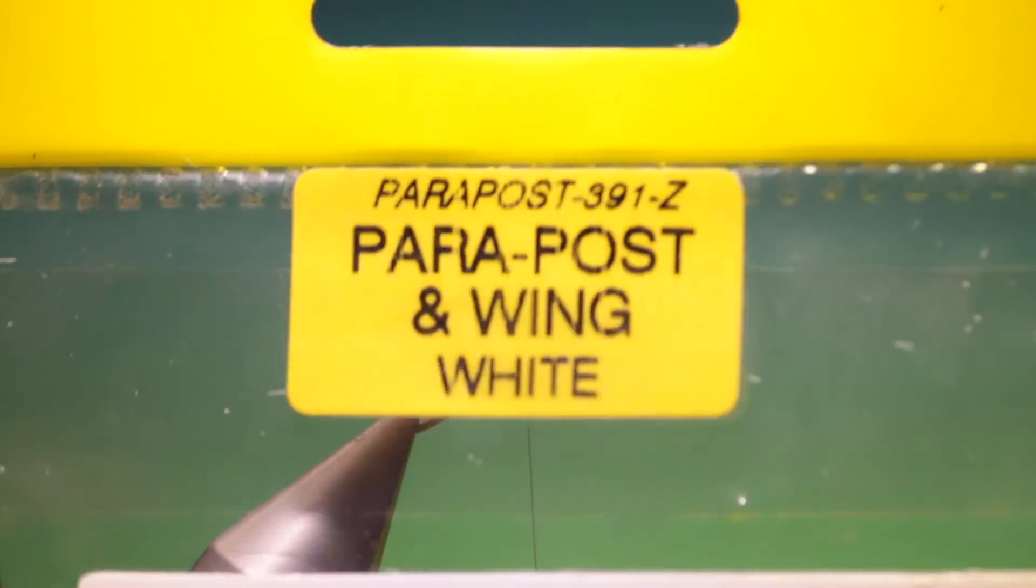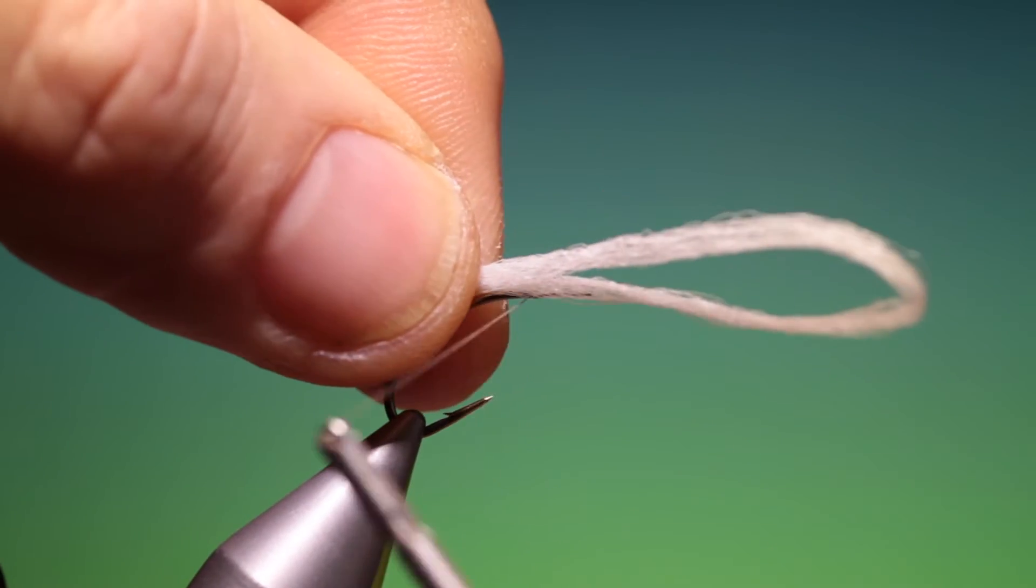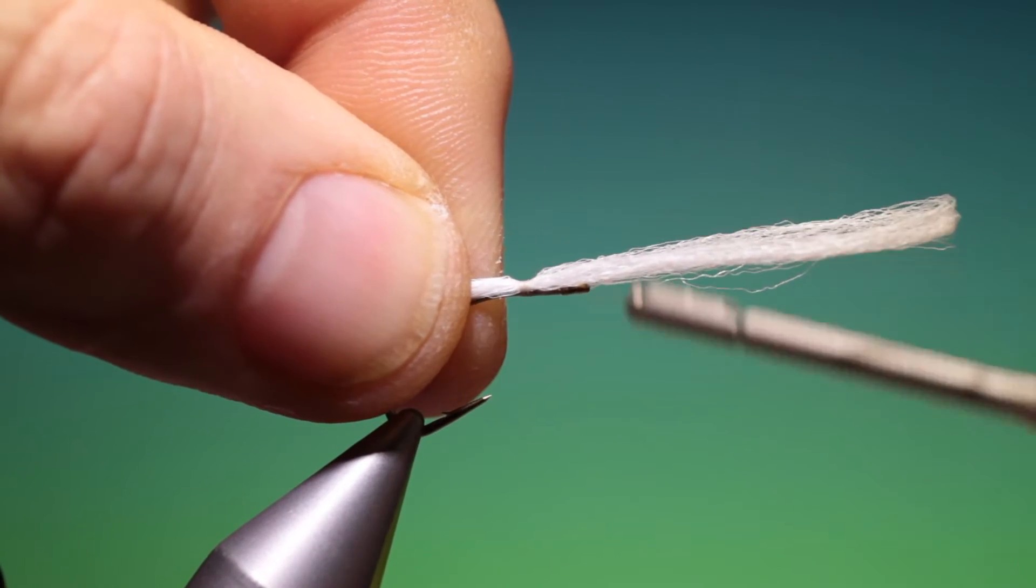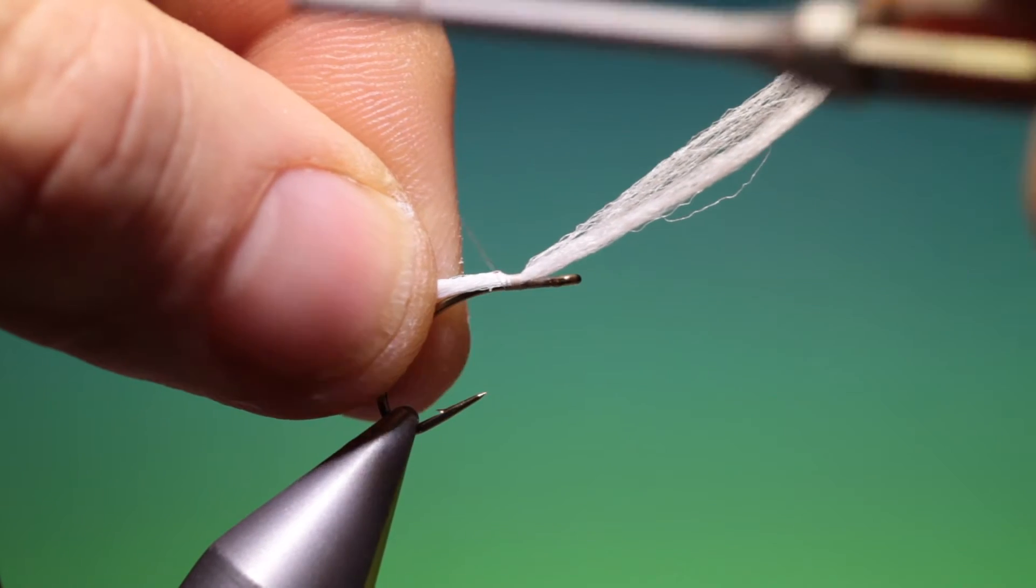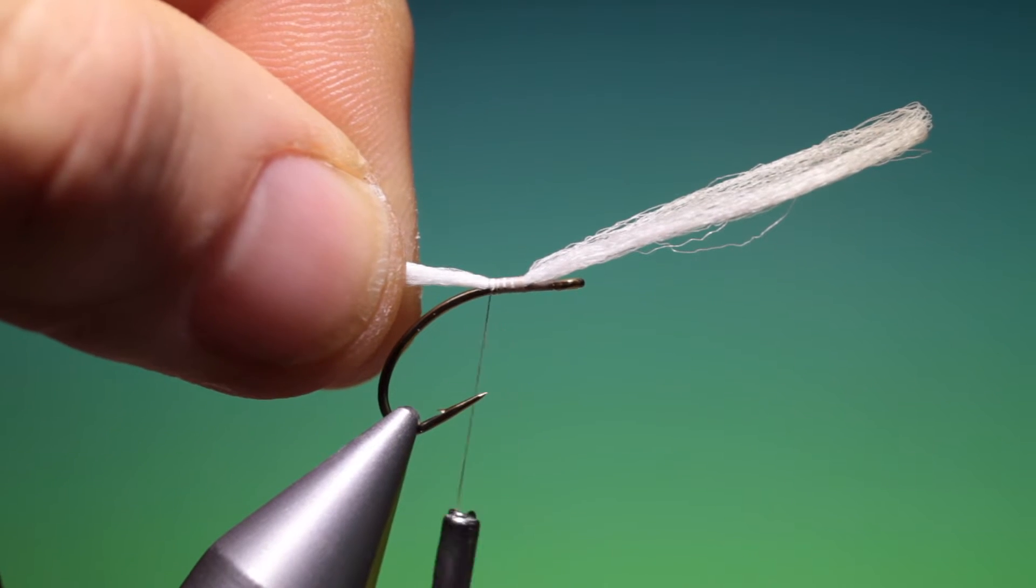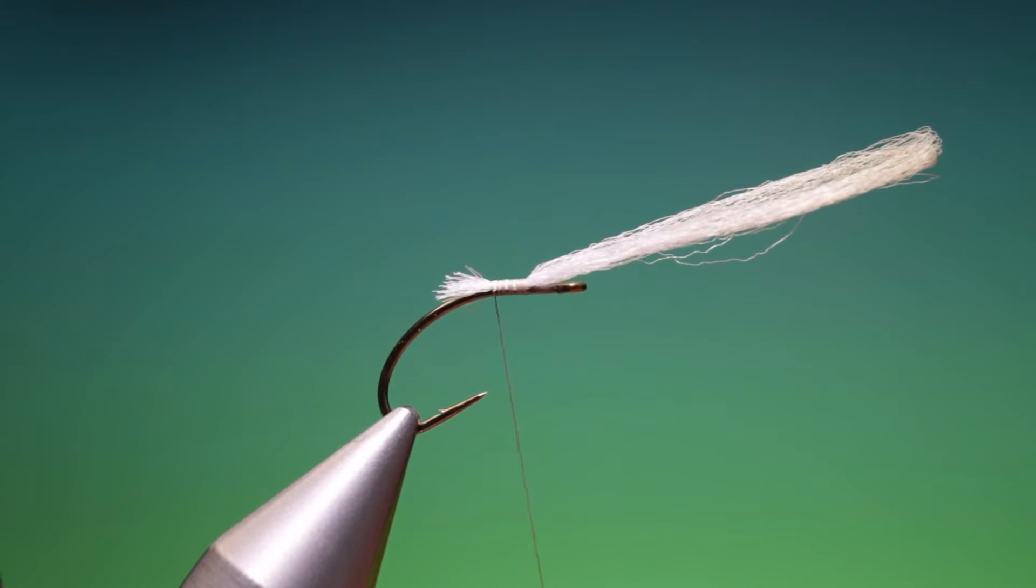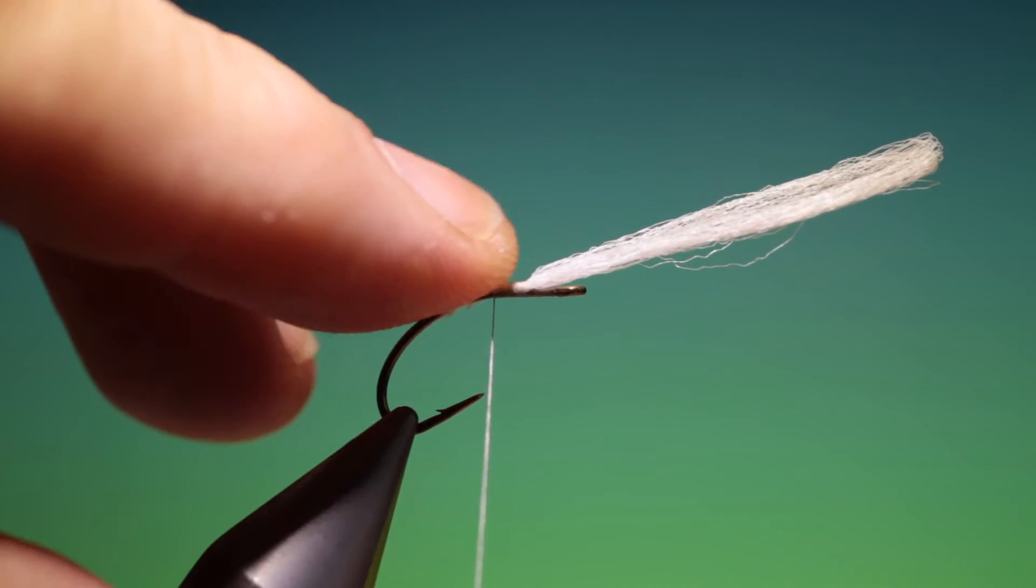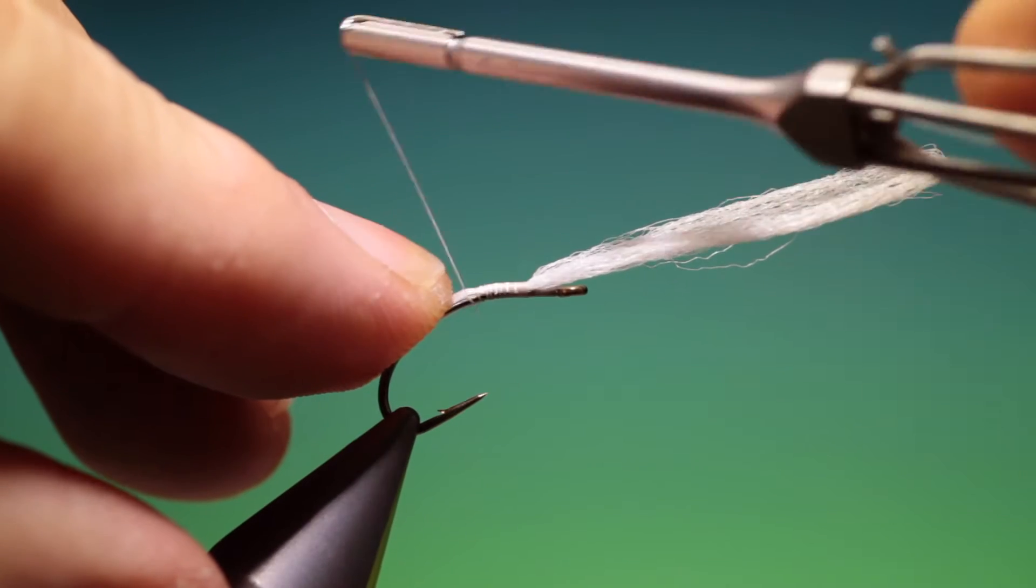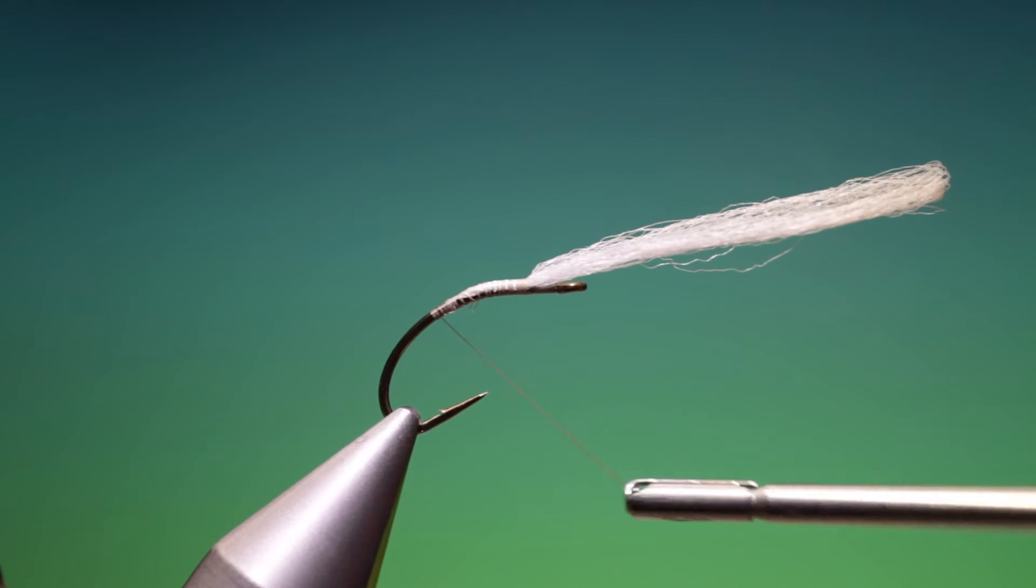Then we need some parapost, a little loop of that and we want to tie this in so we have enough to hold at the back of the hook. Then we go back towards the hook eye first over that little foundation we did, that's about right. And then we go back again over the thorax and we take our scissors and cut that off at an angle. Spin our tying thread anti-clockwise to flatten it. And then we just go over the tapered end to about there.